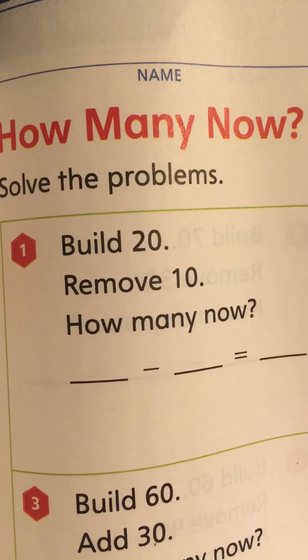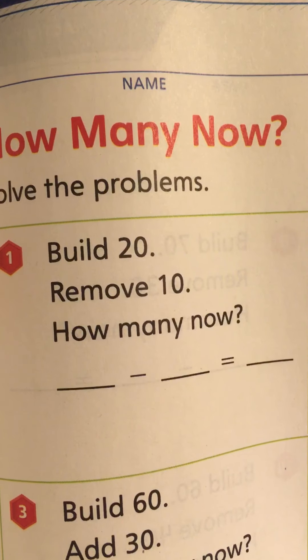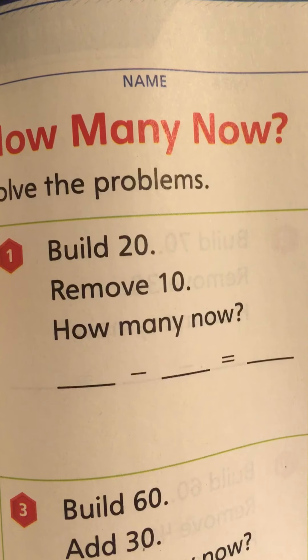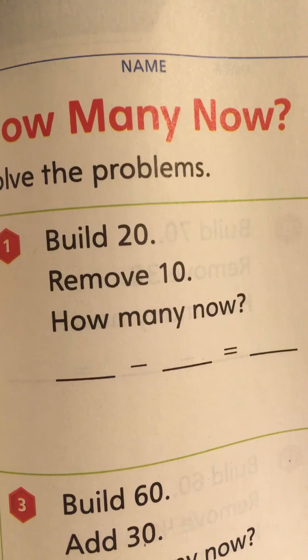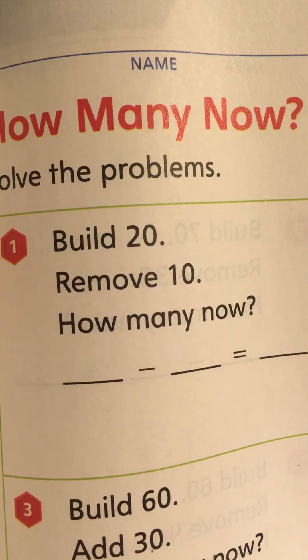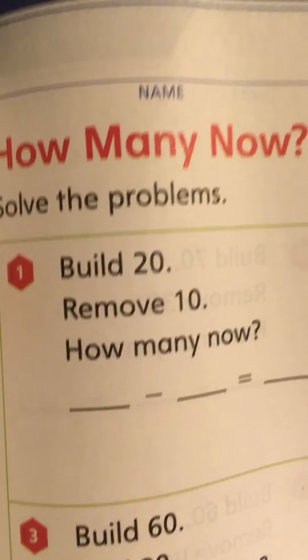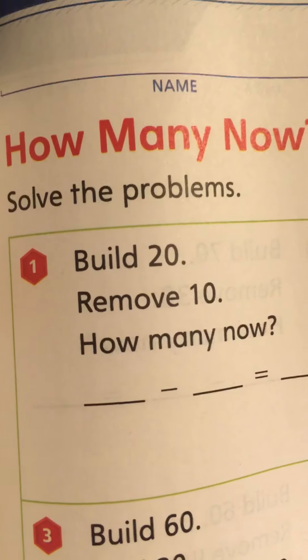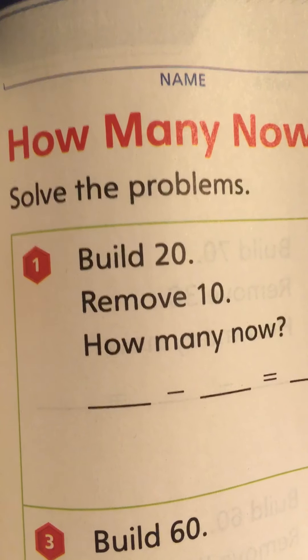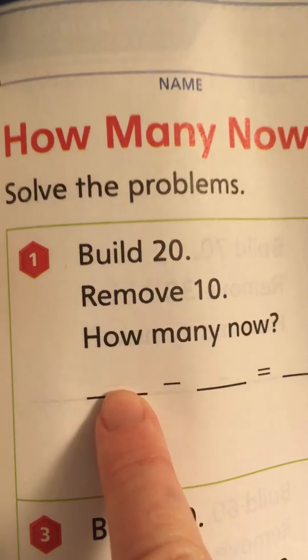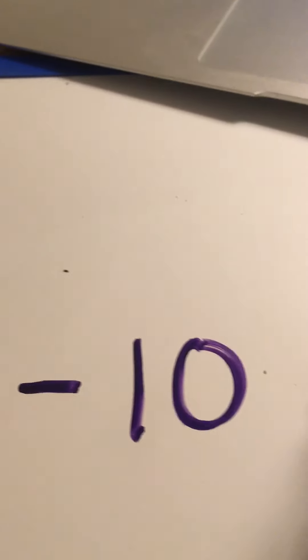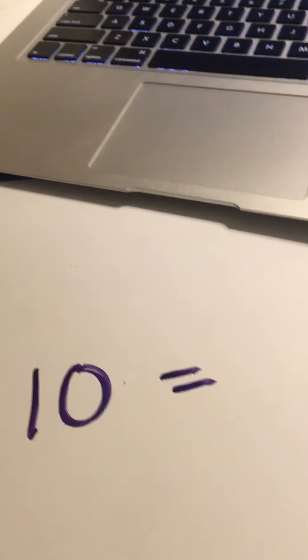So the first problem says — read it with me — build 20, remove 10. How many now? So let's do the first part of our equation. If we're building 20, that's what we're starting with — that's our total number. So we can write 20 on our equation. Write 20 on your paper, and I'm removing 10, so I'm taking away 10. That gives us the equation: 20 minus 10 equals — and we're going to find out the answer.